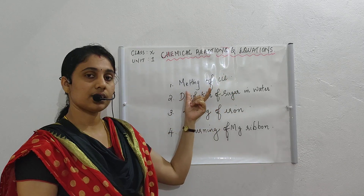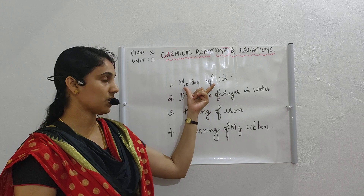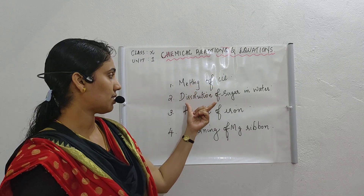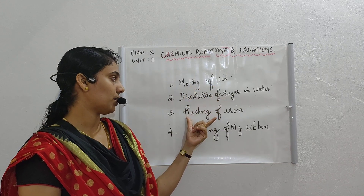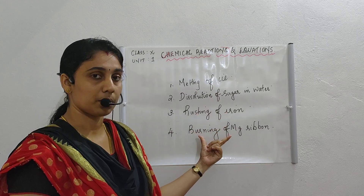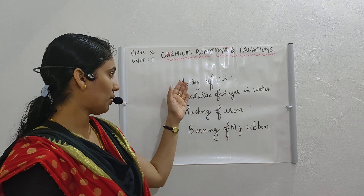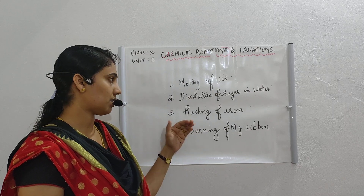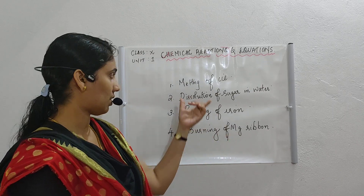Please consider these changes happening in our daily life. The first one is melting of ice. The second one is dissolution of sugar in water. The third one is rusting of iron. And the fourth is burning of magnesium ribbon. Please classify these four changes into physical change and chemical change.